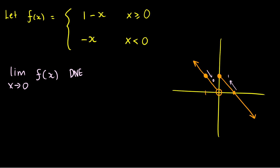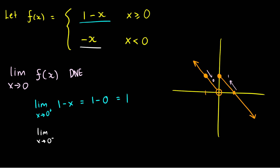How do we verify algebraically? The limit as x goes to 0 from the right: since x is positive, we use 1 minus x, giving 1 minus 0 = 1. The limit as x goes to 0 from the left: since x is negative, we use negative x, giving negative 0 = 0. Since the left-hand and right-hand limits are not equal, the limit does not exist. With piecewise functions, we identify which piece applies when approaching from each side.